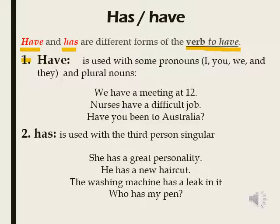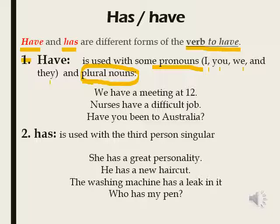Number 1: have is used with pronouns like I, you, we, and they. It is also used with plural nouns — مع الجمع. إذن have تُستخدم مع هذه الضمائر: I, you, we, they، ونستخدمها مع plural nouns. The basic rule says that we should use have with plural — مع الجمع.